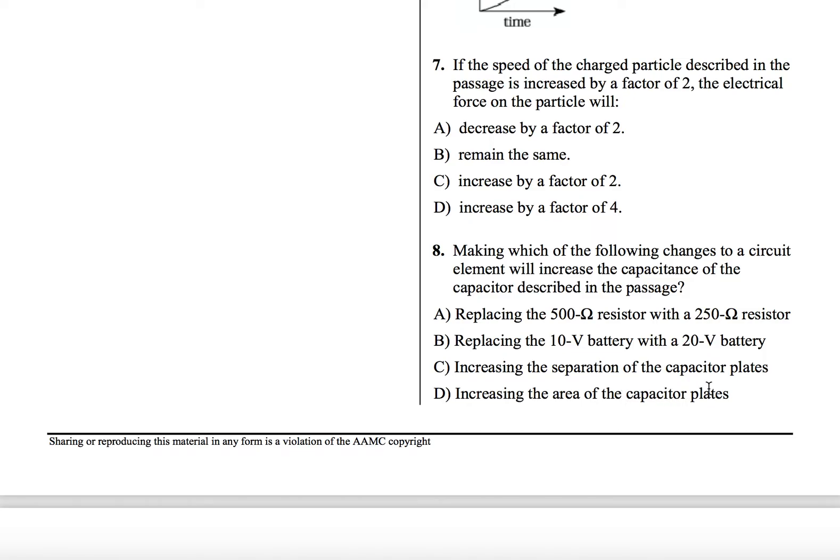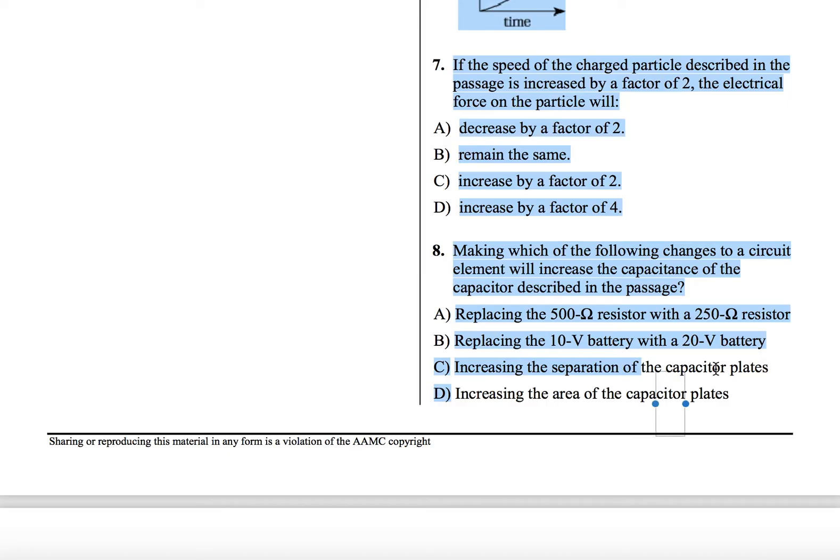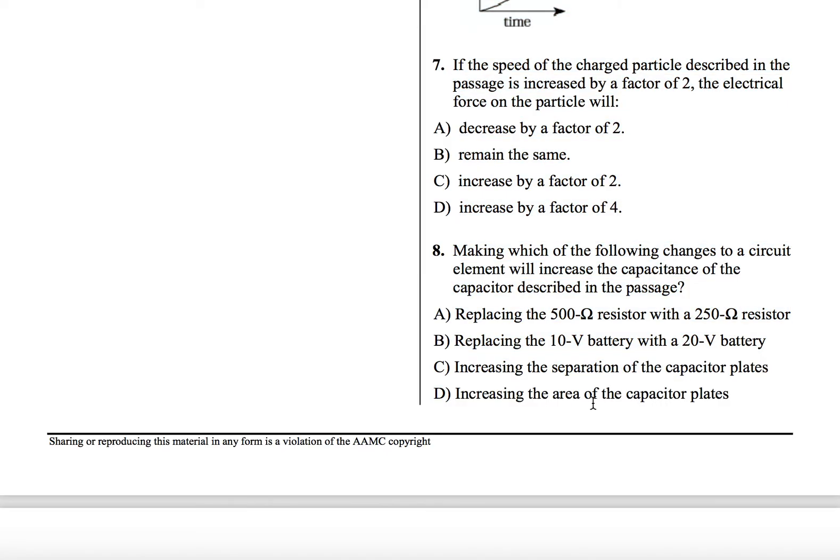C says increasing the separation of the capacitor plates. And D says increasing the area of the capacitor plates. So C and D have to do with the capacitor, which is good. So remember in our equation epsilon naught A over D, if we increase D, because it's an inverse relationship, we should be decreasing C. So that means that answer choice C is incorrect. We want to decrease the separation to increase the capacitance. And so we get to D by process of elimination. Let's just see if it's correct. We increase the area of the capacitor plates. We know that C, the capacitance, and A, the area, have a direct relationship. So if we increase A, we should increase C. And that makes answer choice D the correct answer.